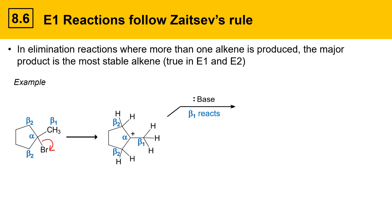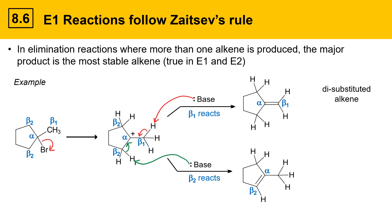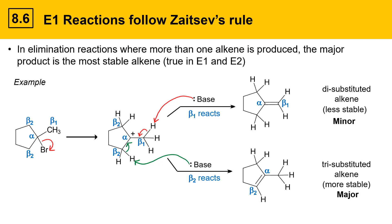Each beta position could react in turn. If the base deprotonates the beta 1 position, the electrons flow to give a double bond between the alpha and beta 1 positions. Alternatively, the base might deprotonate the beta 2 position, giving a double bond between the alpha and beta 2 positions. These alkenes differ in substitution: the top alkene is disubstituted while the lower alkene is trisubstituted. Based on alkene stability rules, the upper alkene is less stable and the lower alkene is more stable. Therefore, by Zaitsev's rule, the top product is minor and the lower product is major.